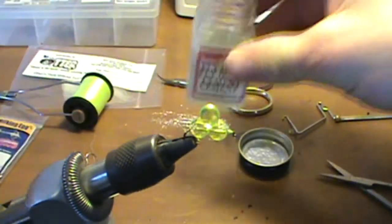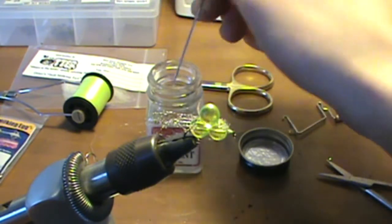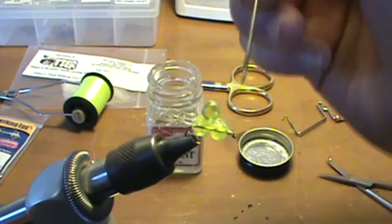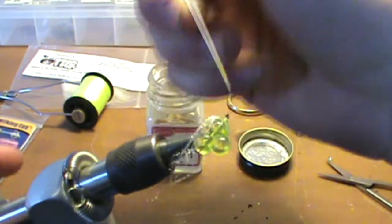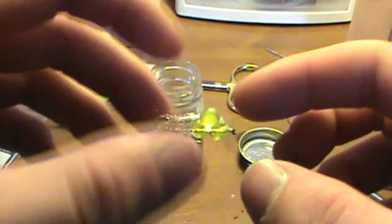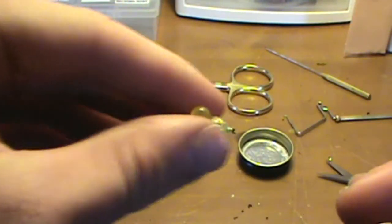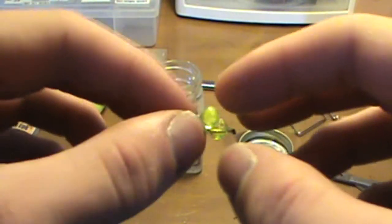Next you're going to take your fly head cement and your needle. Pull a little bit on there and just apply it to the front where you made your knot. You can fix the egg material and the milking material any way you want.